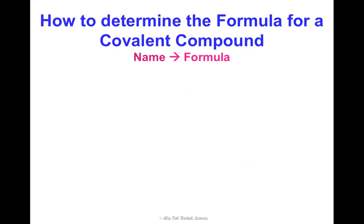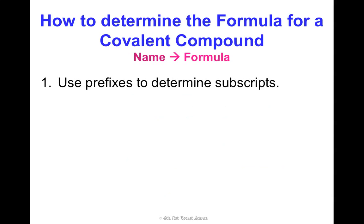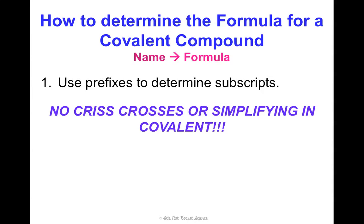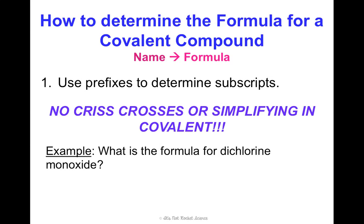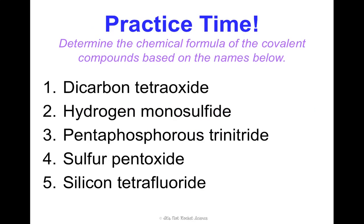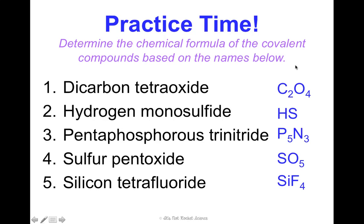Last thing: let's go the other direction. If I give you the name, can you figure out the formula? All you do is use the prefixes to determine the subscripts, and you don't crisscross and you don't simplify. What's the formula for dichlorine monoxide? 'Di' is 2, chlorine is Cl, 'mono' is 1, oxide refers to oxygen — so 2 chlorines and 1 oxygen: Cl₂O. It's that simple. Notice: no reducing for covalent — do not reduce. Now we're going to practice.